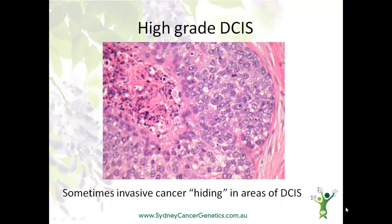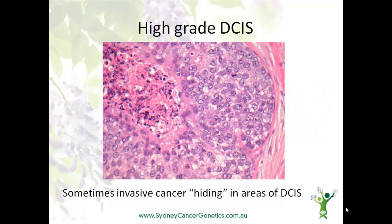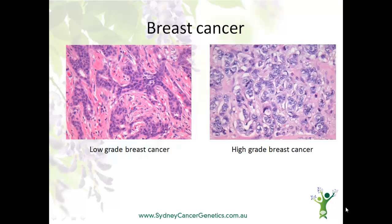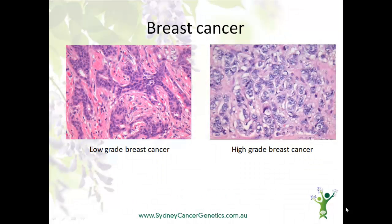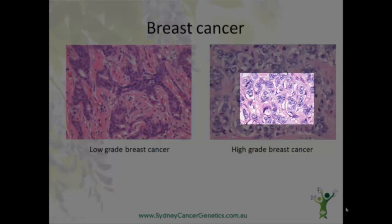Sometimes, if DCIS is widespread, a mastectomy may be recommended. This may seem strange — that you can have a lump removed when it's a cancer, but the whole breast removed for a pre-cancer. This is because there may be invasive cancer hiding inside the areas of DCIS. The pathologist will look very carefully to see if the tumour has invaded beyond this pink membrane. This is breast cancer. On the left, you can see that the cells are no longer neatly organised and are invading into the surrounding tissues. On the right is an example of a high-grade cancer, and you can see just how disorganised these cells have become.